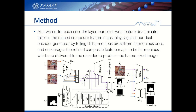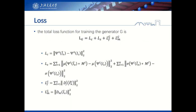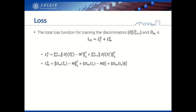Afterwards, for each encoder layer, our pixel-wise feature discriminator takes in the refined composite feature maps, plays against our dual encoder generator by distinguishing disharmonious pixels from harmonious ones, and encourages the refined composite feature maps to be harmonious, which are delivered to the decoder to produce the harmonized image. The total loss function for training the generator G, and the total loss function for training the discriminators D_FL and D_M, are defined accordingly.